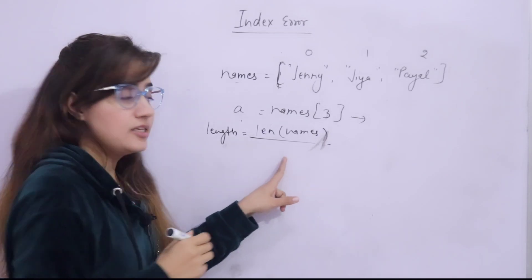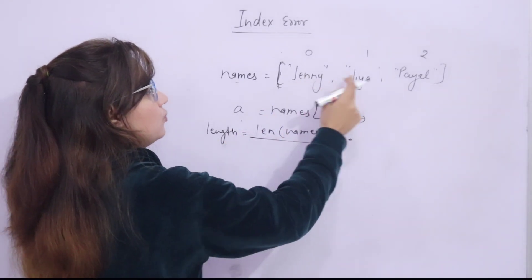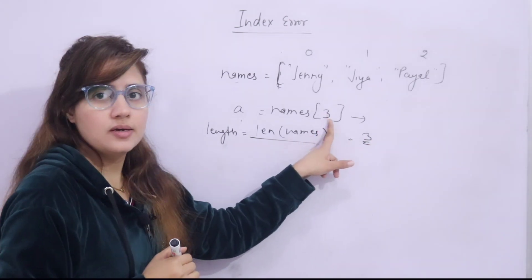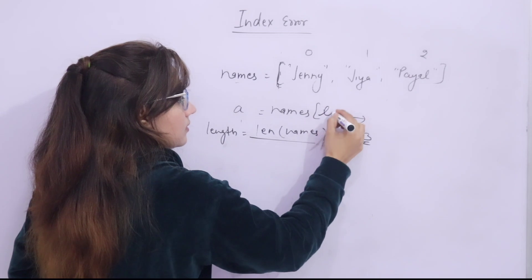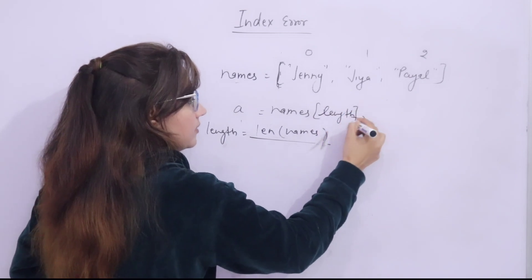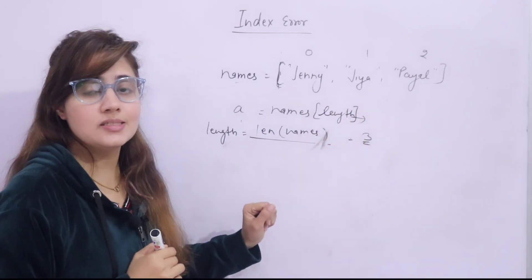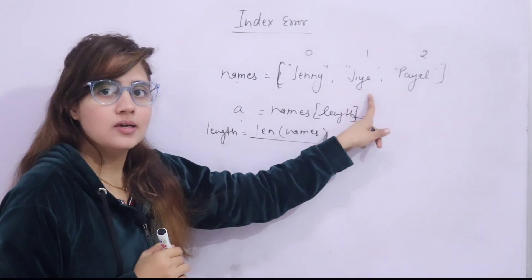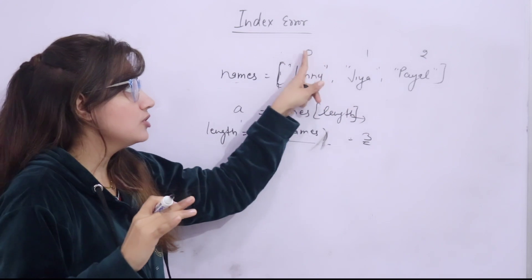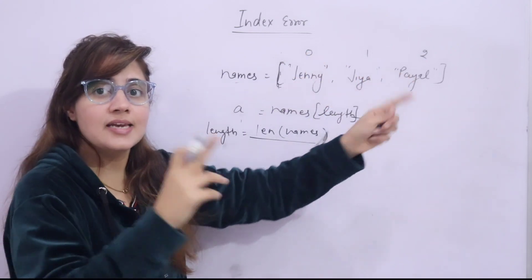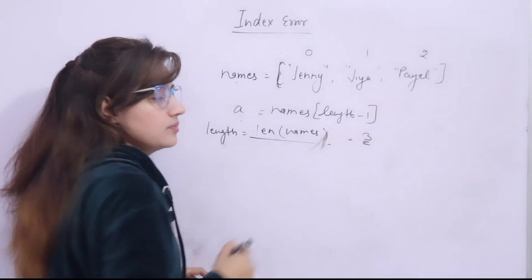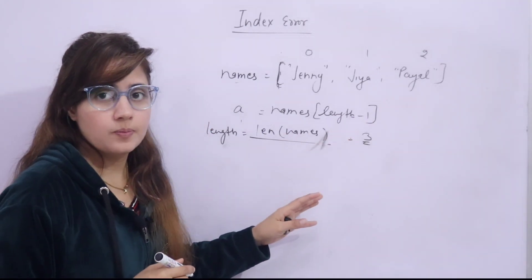But the length of the list, what it will give? If you print length, it will give 1, 2, 3. But here we cannot pass the directly length like this. If you don't know how many items are there, it will give index error, index out of range error. Why? Because length is 3. But index start from 0, 0, 1, 2. So index is length minus 1. So better, you have to give here length minus 1. This is how you can remove this.